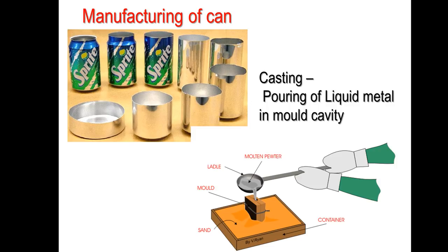Now once you know some material properties, the capturing of object - so here is one diagram, a sprite can, how it is manufactured from a thin sheet metal. So we'll be dealing with this manufacturing process. Second diagram is casting - casting is pouring.